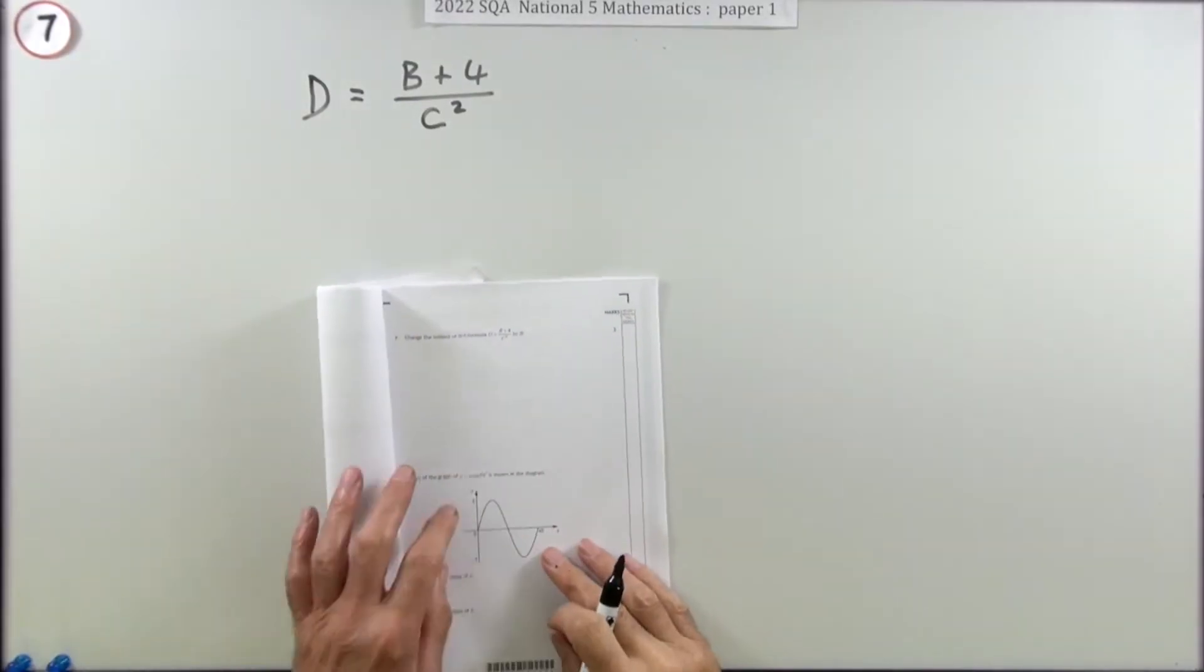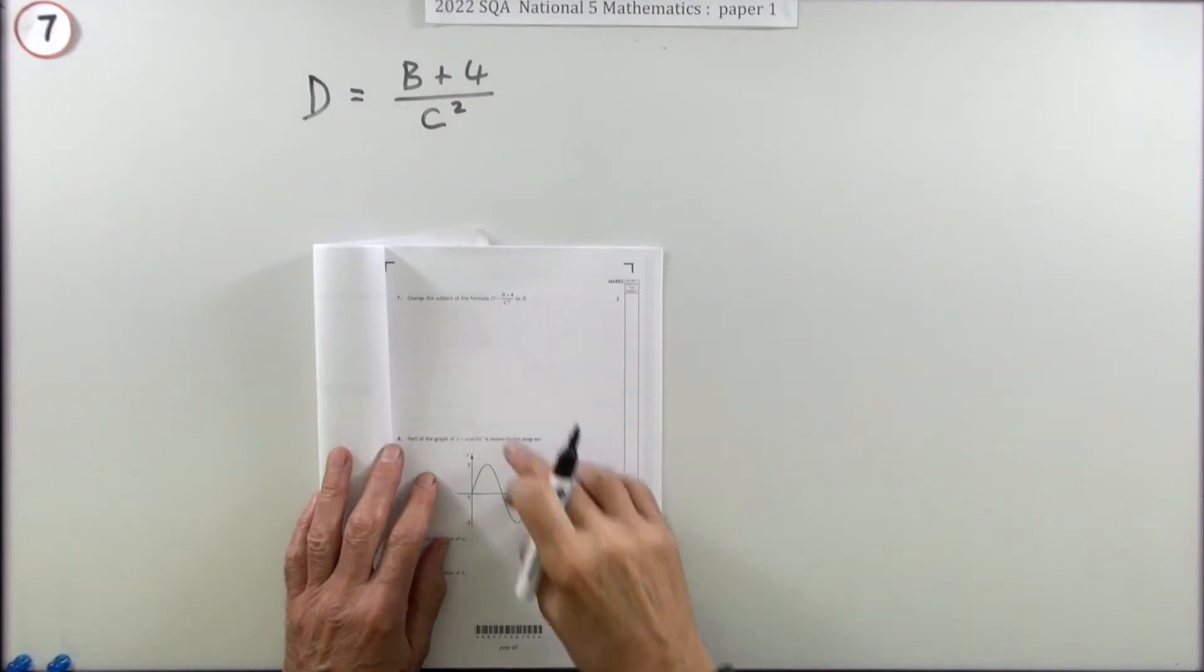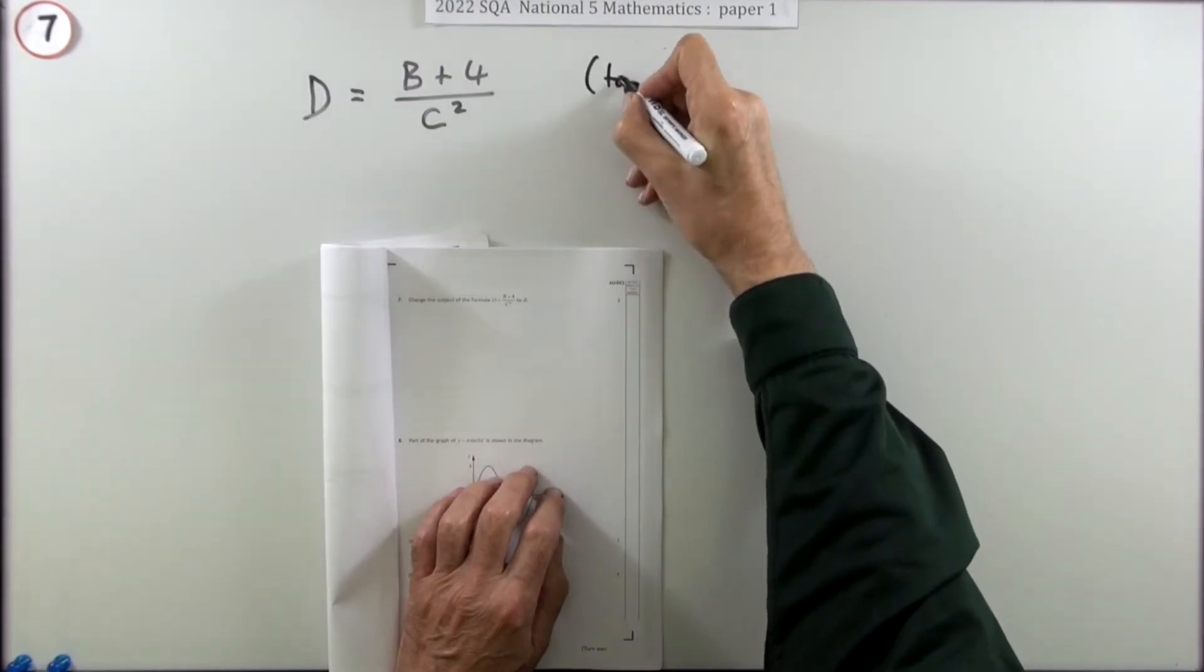Number seven then, from the 2022 National Five Paper One, a two mark question: change the subject of a formula. This one says change the subject of this formula to B.